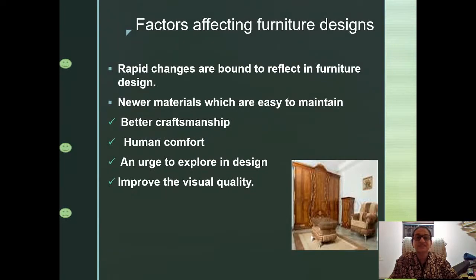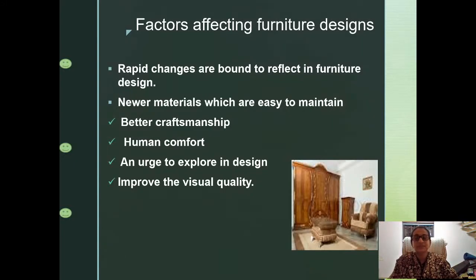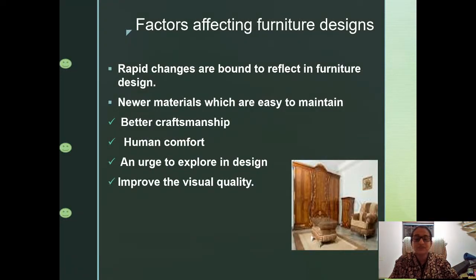What are the factors affecting furniture design? Furniture reflects the rapid changes that happened in society and in lifestyle. The materials used mostly vary depending on the easiness in maintaining them. Earlier it was purely craftsmanship, and later it became industrialized and based on mass production. But it should definitely provide comfort and convenience for the user. Furniture has evolved from time immemorial, and people still adapt previous designs to modern furniture. The use of furniture pieces has improved the visual quality of interiors.